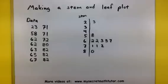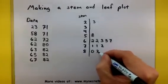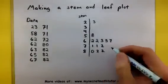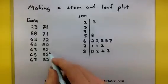But we do have an 80, so put the 0. Then a couple of 82's. Oh, it looks like another 82. 1, 2, 3 of them.